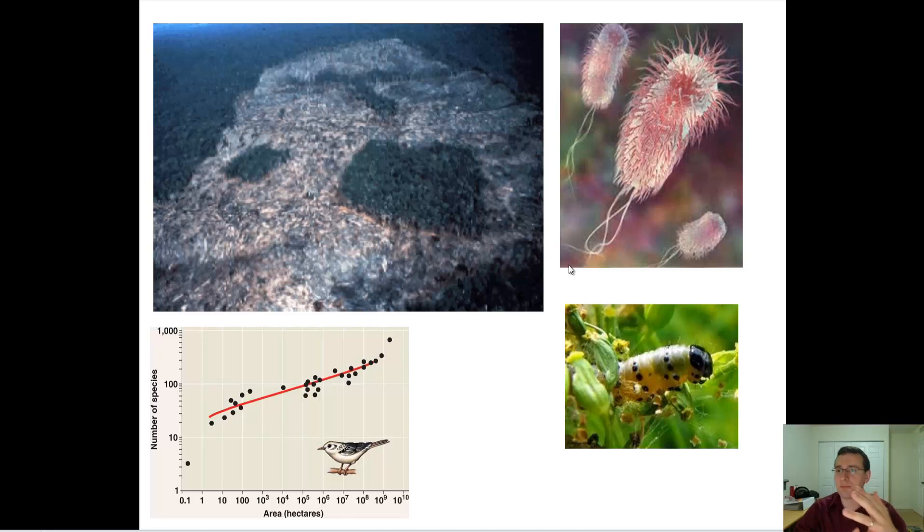We overexploit the ecosystem. We cut down too much, we destroy too much. We pollute the ecosystem. And on top of all of that, we do the thing that is the most responsible for destroying ecosystems on Earth. We cut down the habitat. The single most destructive thing for biodiversity is habitat size.